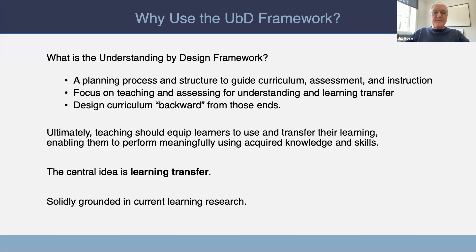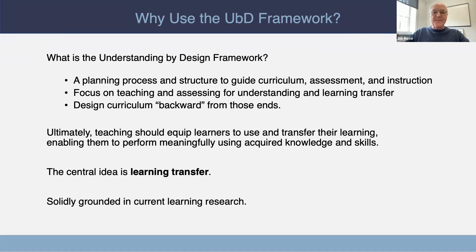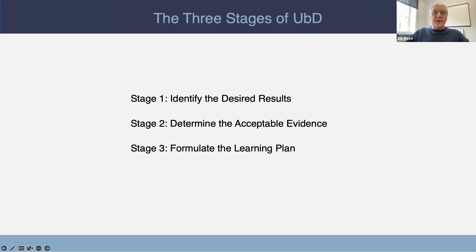The framework rests on a very strong foundation. The Association for Supervision and Curriculum Development puts it well: the Understanding by Design framework is guided by the confluence of evidence from two streams — theoretical research and cognitive psychology, and results of student achievement studies. That first tenet is critical. One option is to just go it alone, relying on your own experience and instinct. Another option is to use a recognized approach for guidance. UBD's strength is that it offers a flexible process without being overly prescriptive. Effective instruction is planned backwards through a three-stage process: identifying the desired results, determining the acceptable evidence, and formulating the learning plan.